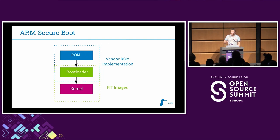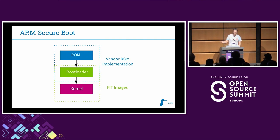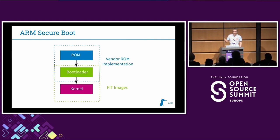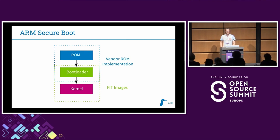For ARM it's pretty much the same. You have a vendor ROM implementation — depending on your vendor, you may need to sign an NDA first. You have some bootloader, which doesn't have to be only U-Boot; it can include ARM Trusted Firmware, Barebox, or some Linux boot system. The ROM code verifies the bootloader. The standard nowadays, at least for U-Boot and Barebox, is to use so-called FIT images to verify a kernel, device tree, and initramfs. FIT stands for Flattened Image Tree, a derivation of the Flattened Device Tree naming.